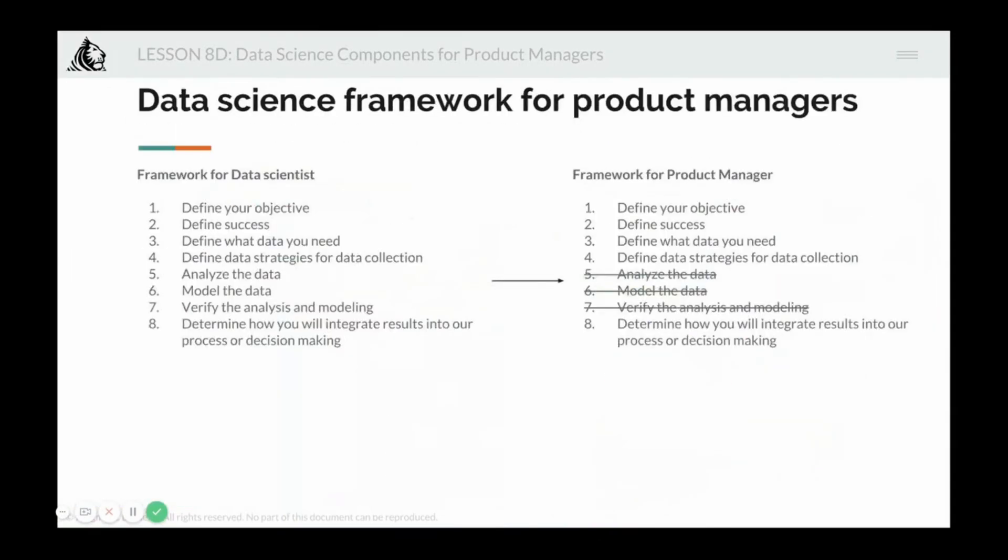So what is the data science framework for product managers? This is my eight step framework that I recommend. You define your objective, that is you define what is the problem, what do you want to accomplish, you define success. How do you know that you met your objective? How does success look like? How do you measure it quantitatively? Then you define what data you need, what variables, factors, or models support your objectives.